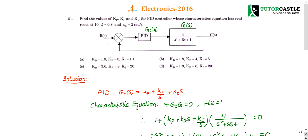Question number 61: find the values of Kp, Ki, and Kd for the PID controller whose characteristic equation has a real root at -10, zeta equal to 0.8, and omega_n equal to 2 radians per second. A block diagram is given along with the zeta and omega_n values, and we need to find the constant values of the PID controller. This is a simple question if you know the transfer function of the PID controller.